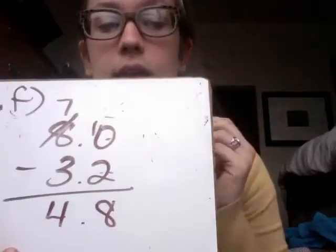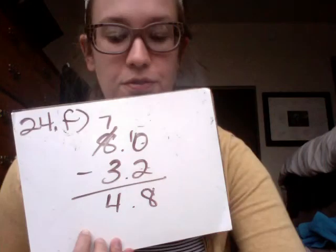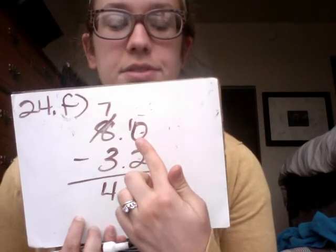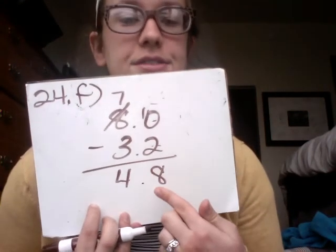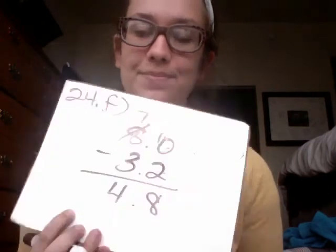Let's do one more — F as in Frog. I did not have enough tenths to subtract from, so I traded in one of my ones to make ten tenths. Ten tenths minus two tenths is eight tenths. Seven ones minus three ones is four. So four point eight. Hopefully that's making lots of sense to you, and I hope you have a wonderful day.